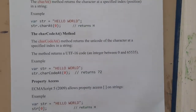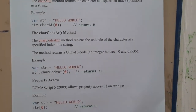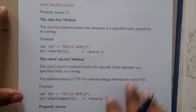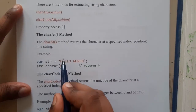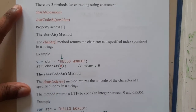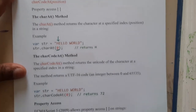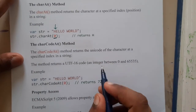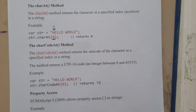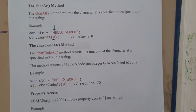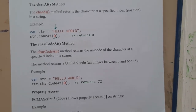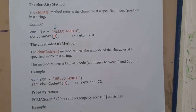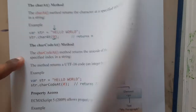For `charAt(0)`, the character at index 0 is 'h', so it prints 'h'. `charCodeAt` returns the UTF or ASCII code of the character — both refer to the same value.